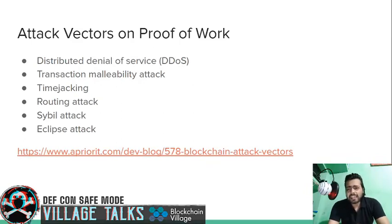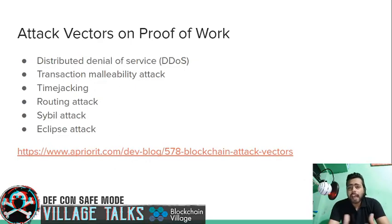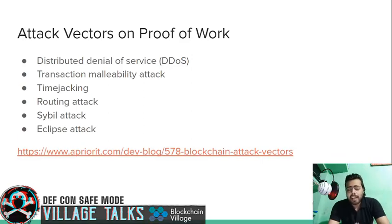Suddenly the malicious actors decide to turn their machines off. The remaining three machines have to do the work of nine machines. The hash rate decreases, block creation rate decreases, and eventually creates a denial of service.